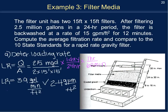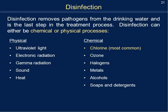The last phase is disinfection. Disinfection can use physical means — UV light, electronic radiation, gamma radiation, sound, or heat — or chemical means such as chlorine, ozone, halogens, different metals, alcohol, or soaps and detergents. By far the most common is chlorine, which is added to remove pathogens and then itself treated before distribution.